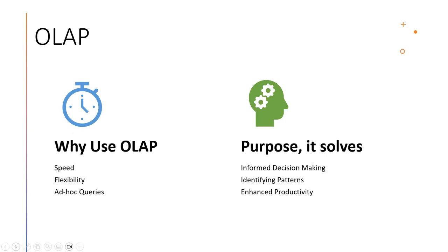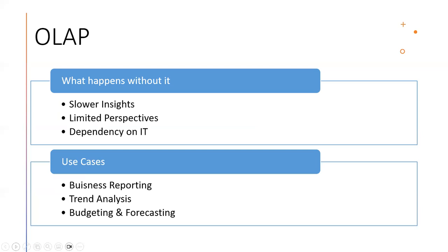Now it's time to understand what would happen if we don't use OLAP, because it's not like we've been using it from the very beginning. It's only in the last decade that it's been much in conversation. If we do not have this, then we have slower insights, because traditional databases might not handle complex queries as efficiently as OLAP solutions do.